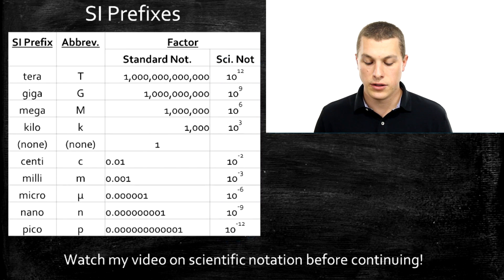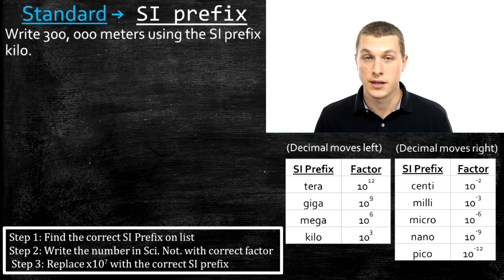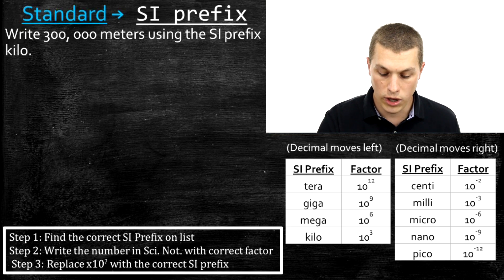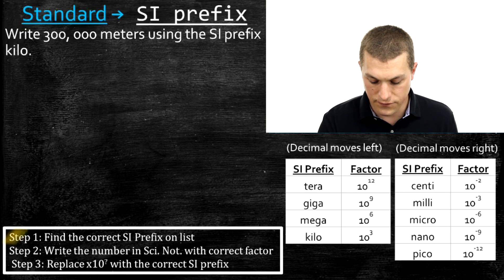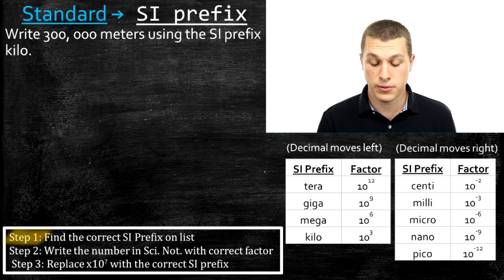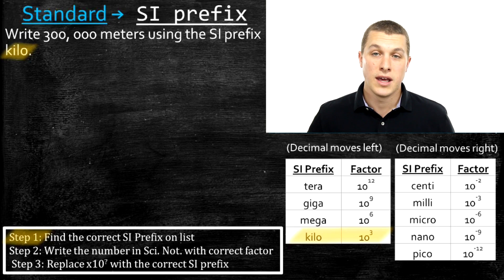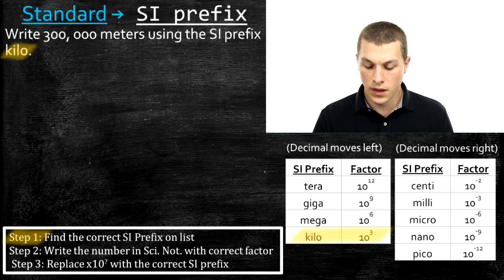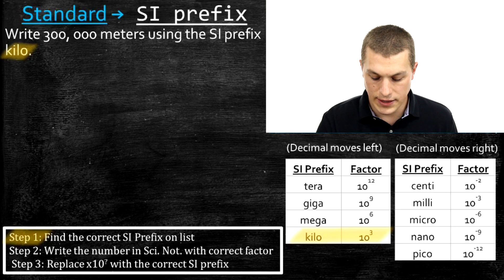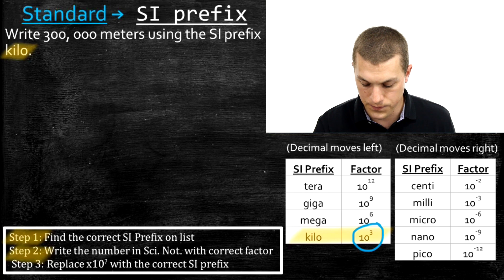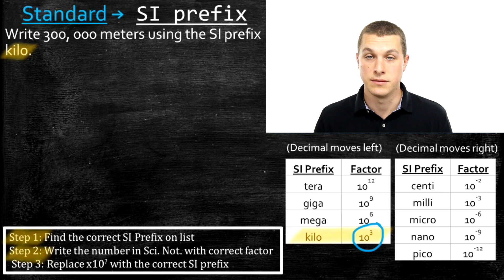Now we're going to look at a problem where we want to write 300,000 meters in terms of kilo — basically in terms of kilometers. Step one is just find the correct SI prefix on the list. The correct SI prefix here is kilo, and on our list we see kilo is next to ten to the third, meaning kilo and multiplying by ten to the third are the same thing. Step two is to write the number in scientific notation with the correct factor, which is ten to the third.